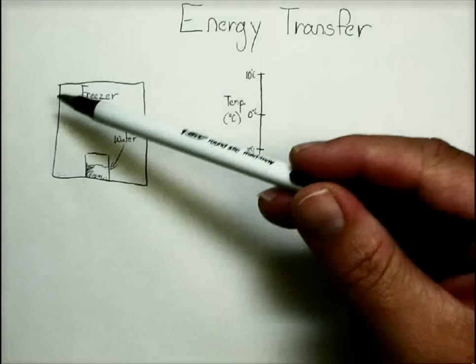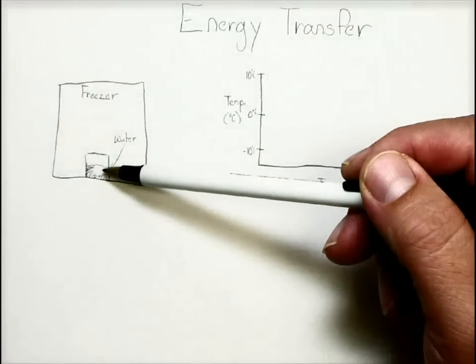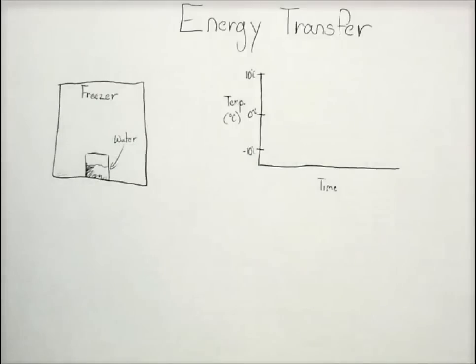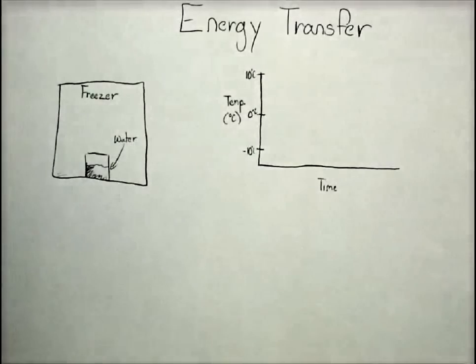We've got a freezer, and we've got in it a container of water. And let's say that water, when we first put it in the freezer, is going to have a temperature of 10 degrees Celsius.